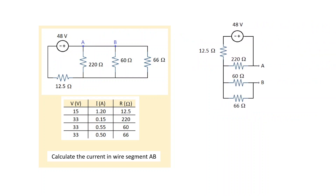Now, to solve this as a Thevenin circuit problem, we need to distinguish between an output and the rest of the network. The question dictates the output: calculate the current in wire segment AB, meaning that wire segment AB is the output. I've done a redrawing of the network with the output missing — it's an open output. You can verify that the rest of the connections are the same as the original circuit. With this open circuit output redrawing, we calculate the Thevenin volts and the Thevenin ohms.